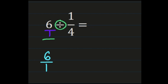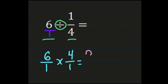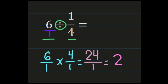Then our division sign — we're turning it into a multiplication sign. And we're multiplying by the reciprocal of the second fraction. So the reciprocal of one-fourth is four over one: our denominator becomes the numerator and the numerator becomes the denominator. Now that we have our problem set up, we're multiplying fractions. Numerator times numerator: six times four is twenty-four. Denominator times denominator: one times one is one. And twenty-four over one simplifies to twenty-four. So our final answer is twenty-four.